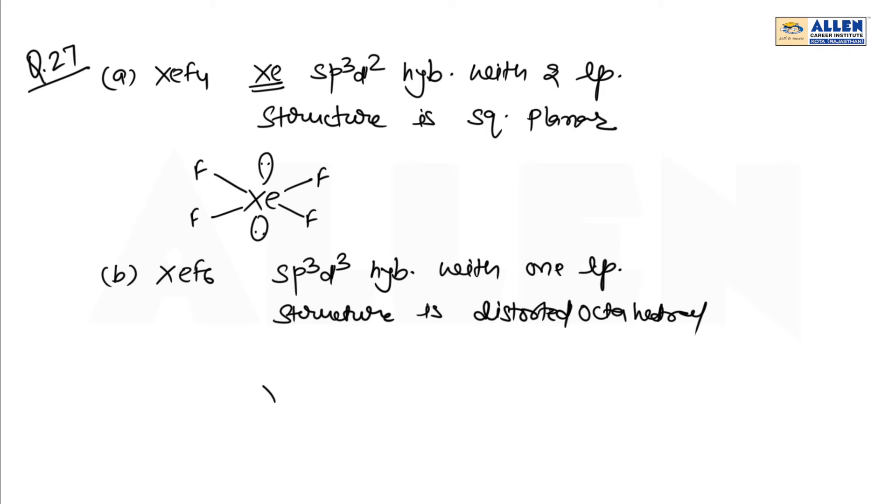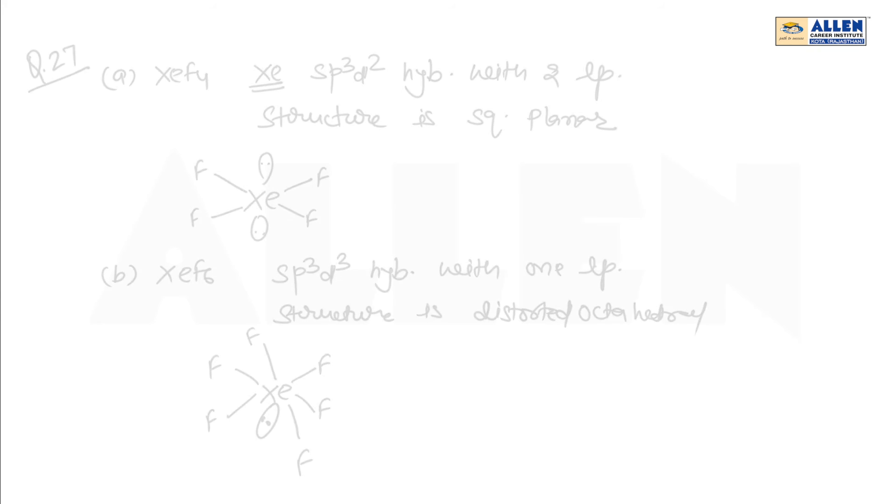The structure has xenon as the central atom, 5 bonds present in a plane with 1 lone pair. This is called distorted octahedral geometry. Third compound is XeOF4.